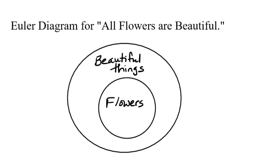In this video, we're going to talk about the difference between truth and validity in a logical argument. In order to analyze the statements and arguments that we're going to be looking at, we're going to use a tool called an Euler diagram.